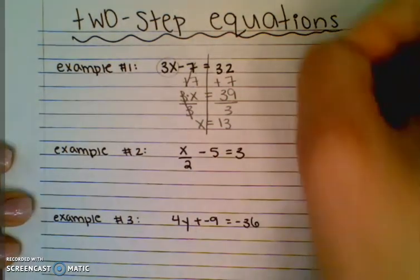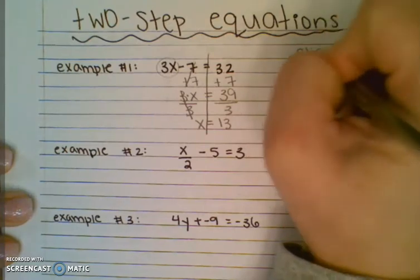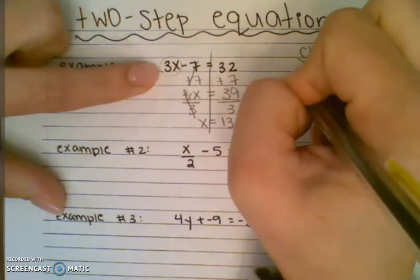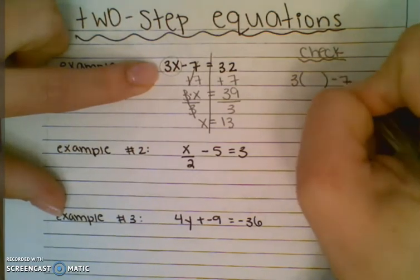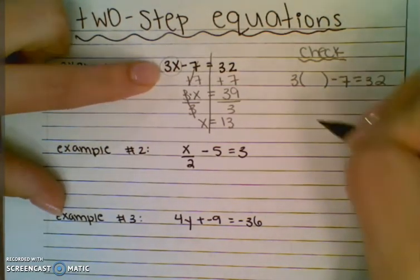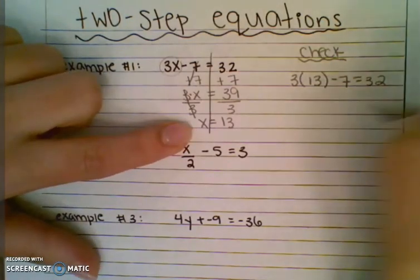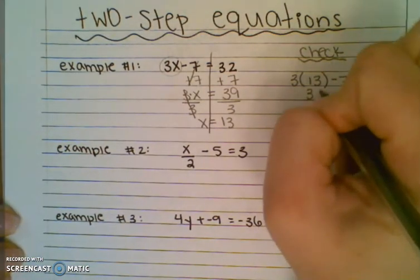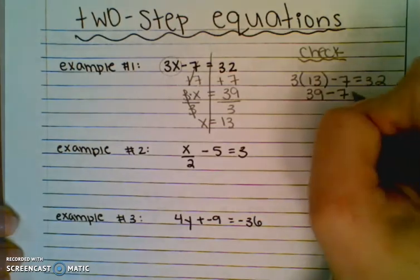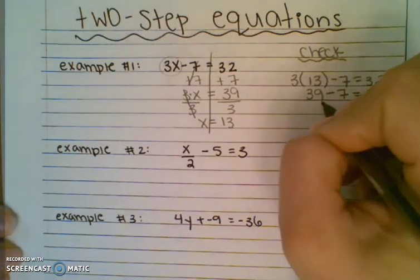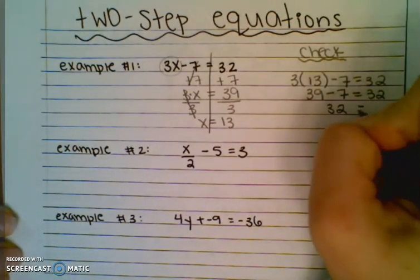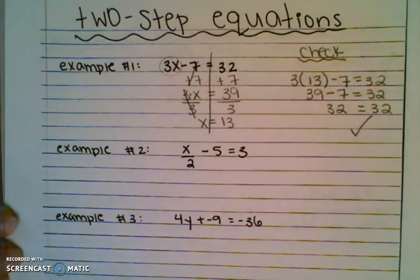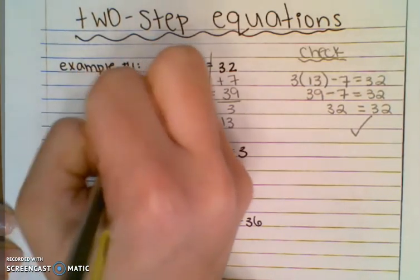If I wanted to, I could check. Checking means I'm plugging it back into the original equation. It was 3 times x minus 7 had to equal 32. My x was 13. So 3 times 13 is 39, minus 7 comes down — has to still equal 32. 39 minus 7 is 32, and 32 equals 32. True statement. So my final answer for this was x equals 13.